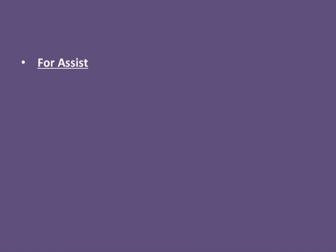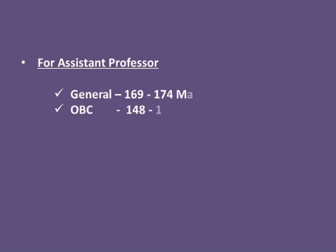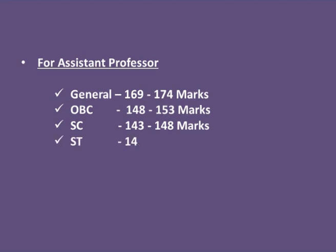For assistant professor in English, the cut-off for general category could be 169 to 174 marks. For OBC, 148 to 153 marks. For SC category, 143 to 148 marks. For ST category, 145 to 150 marks.